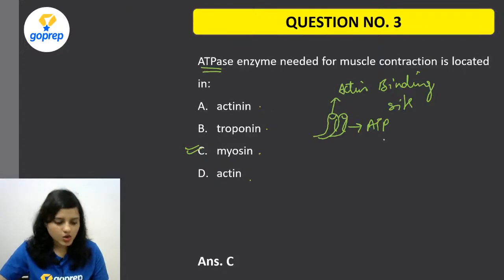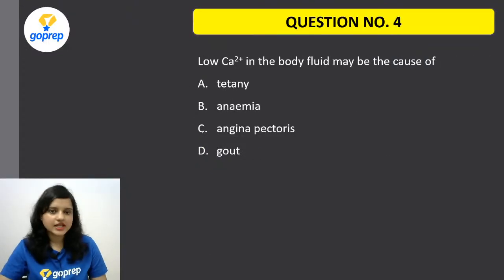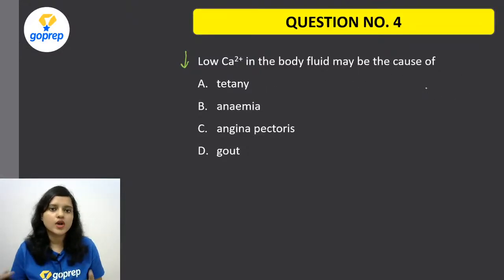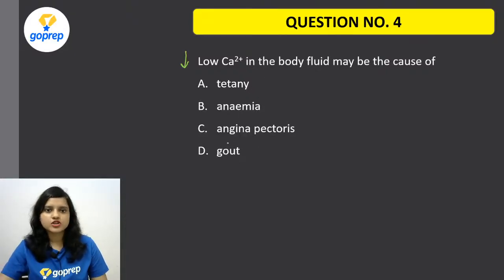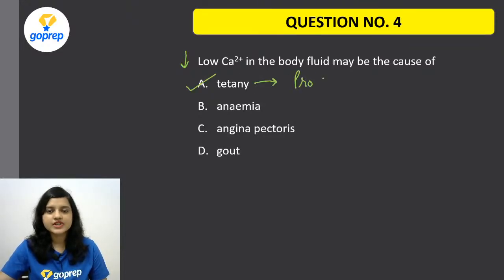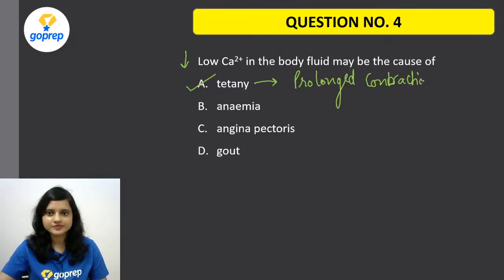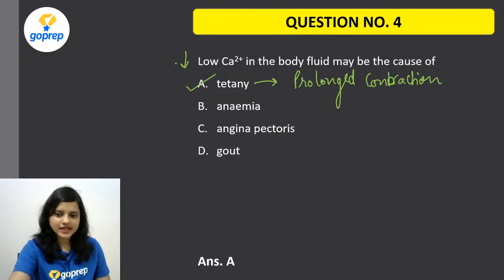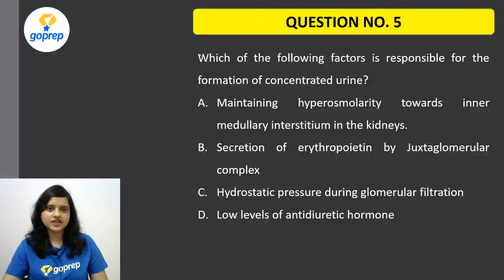Next question: Low calcium level in body fluid may be the cause of — Tetany, Anemia, Angina Pectoris, or Gout? The correct option is Tetany. Tetany is prolonged contraction without relaxation, also known as lockjaw. The correct option was A.